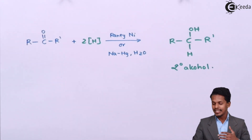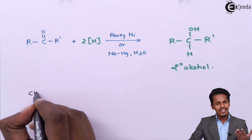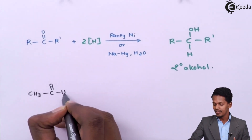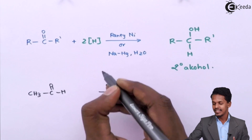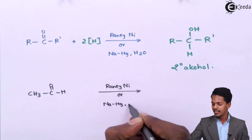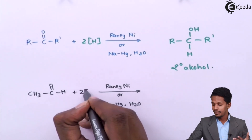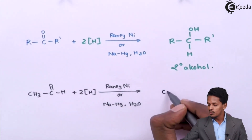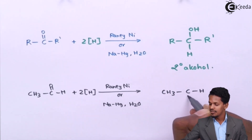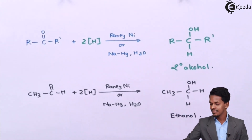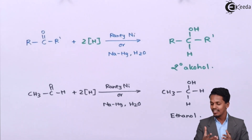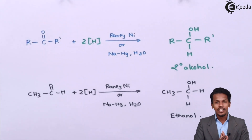For a simple example, consider acetaldehyde, CH3-C(=O)-H, reacted with sodium amalgam in the presence of H2O. With two nascent hydrogen atoms, this is converted into CH3-CH2-OH, that is ethanol. Similarly we can use nascent hydrogen from Raney nickel or sodium amalgam with water to convert a ketone into a secondary alcohol.